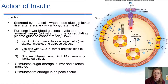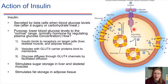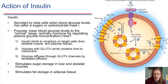Insulin binds to a specific type of receptor on the cell surface — think back and see if you can remember what type this is, as it's going to initiate a second messenger system. This is a tyrosine kinase receptor. Once the insulin molecule binds, the tyrosine kinase activity will become activated, resulting in a signaling cascade.